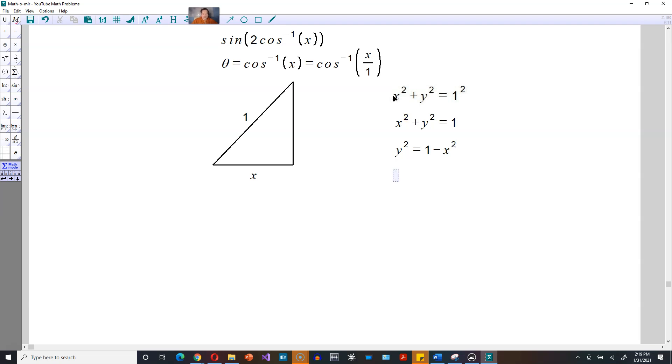Y squared at first would be equal to 1 minus x squared, and then here you would take the square root, so y by itself would be equal to the square root of 1 minus x squared.